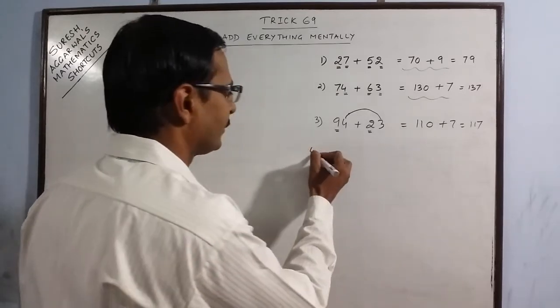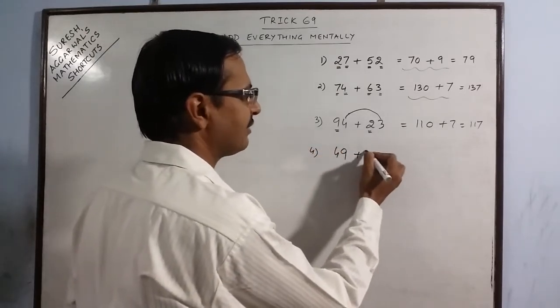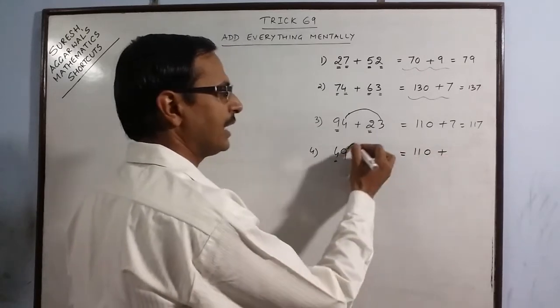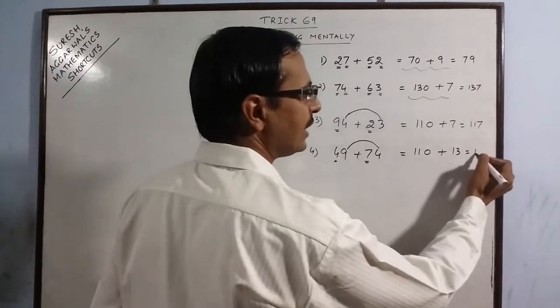More examples of this. Say we have 49 and 74. Now see 4 plus 7 is 11. Put 1 0. 9 plus 4 is 13. 123.